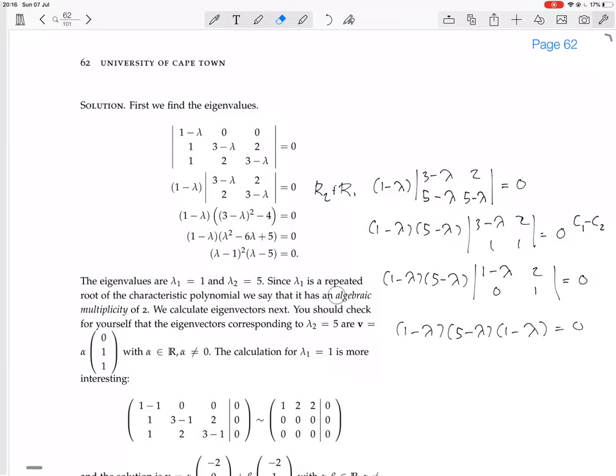This is algebraic multiplicity - algebraic because it's a multiplicity to do with this polynomial, and polynomials are part of algebra. Now we're going to calculate eigenvectors. It says you should check for yourself that the eigenvector corresponding to lambda 2 equals 5 is [0, 1, 1]. The calculation for lambda 1 equals 1 is more interesting.